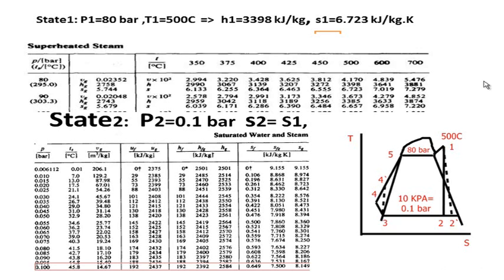To find state two, we have to consider the efficiency of the turbine. There is an ideal state, which here represents two, and there is an actual state, which represents two prime. To find two prime, first we have to find the ideal case, two, and then using the efficiency of the turbine, we can find the enthalpy of the actual state that exits from the turbine.